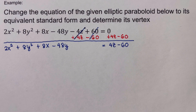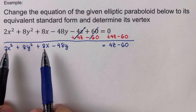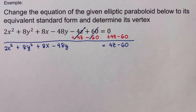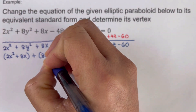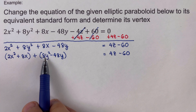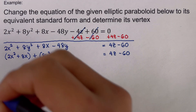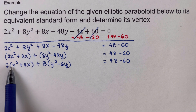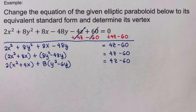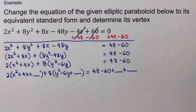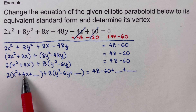Next, we group all the x terms (x squared and 8x) together and all the y terms (8y squared and −48y) together. We then factor out 2 from the x group and 8 from the y group. After that, we complete the square by adding blank terms to both groups and balancing both sides of the equation.